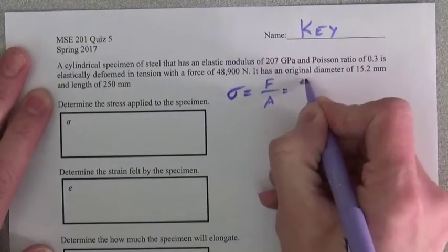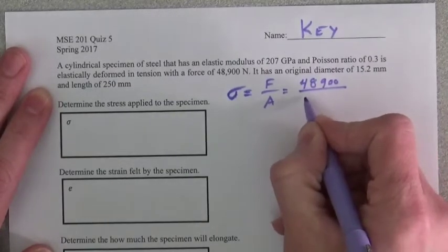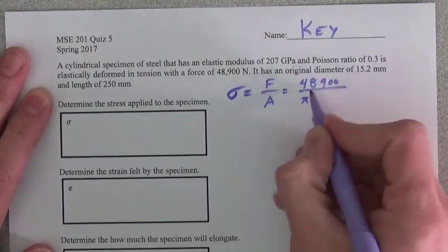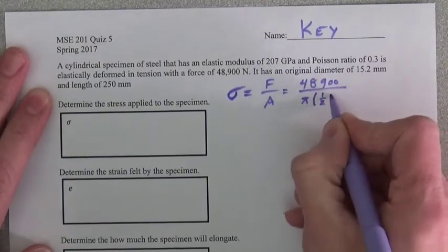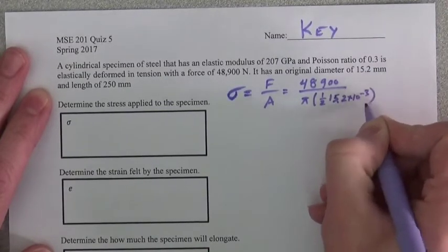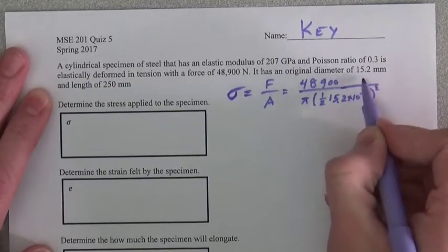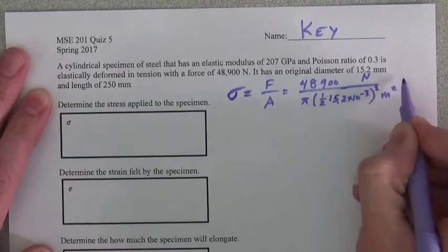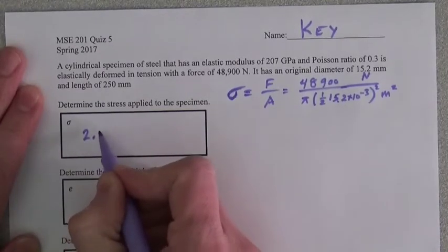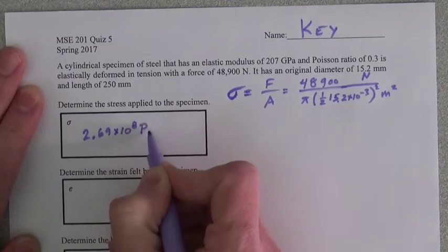So that is 48,900 over π and then r squared, and the diameter is that, so that's going to be 1 half of 15.2 times 10 to the minus 3 squared, and this is Newton per meter squared. Newton per meter squared is a Pascal, and that gives us 2.69 times 10 to the 8 Pascal.